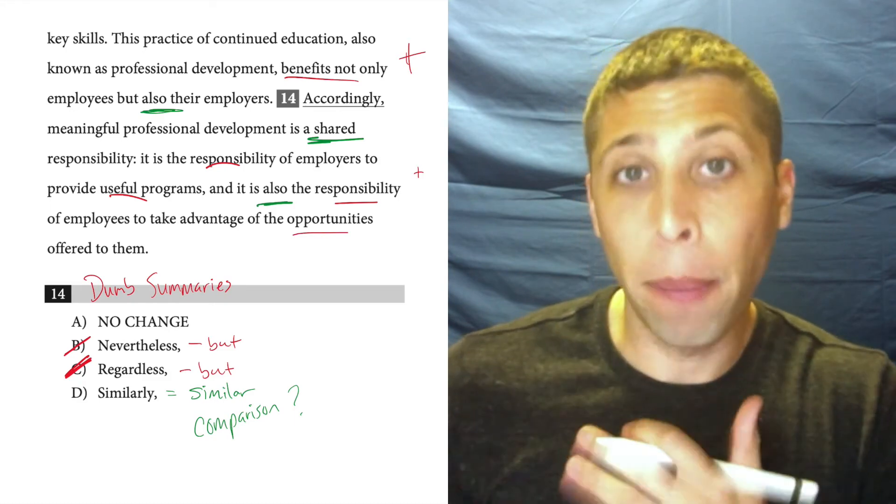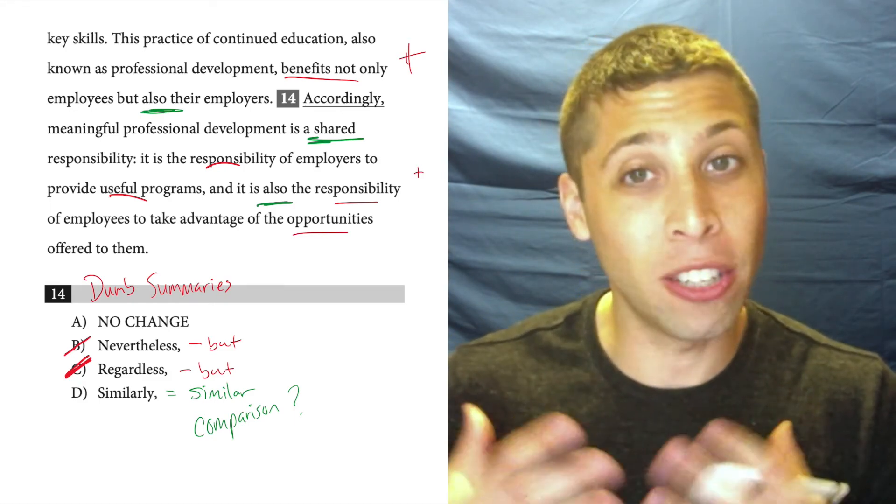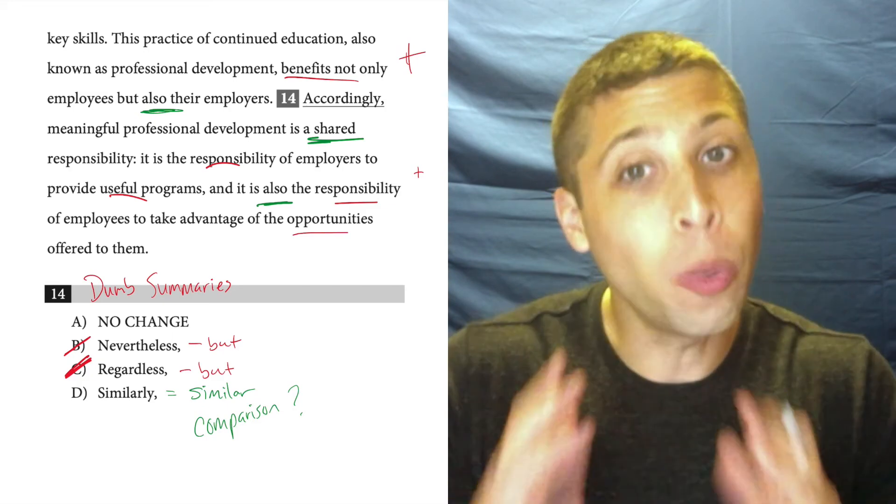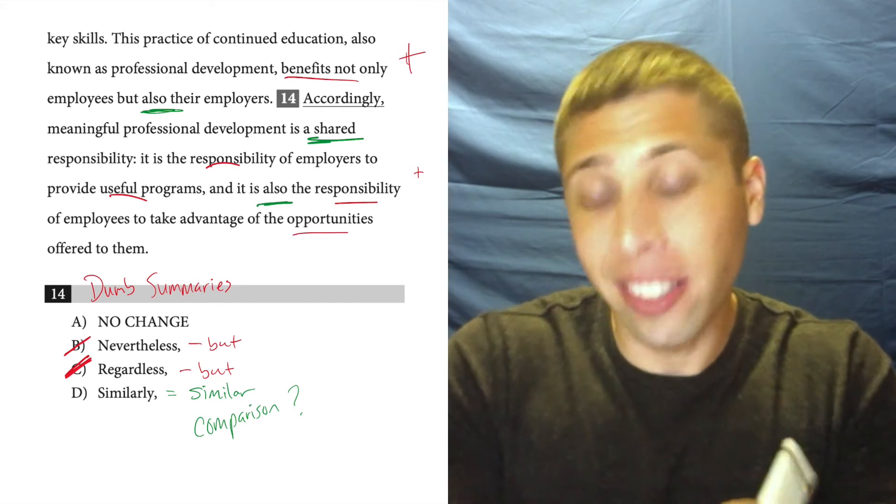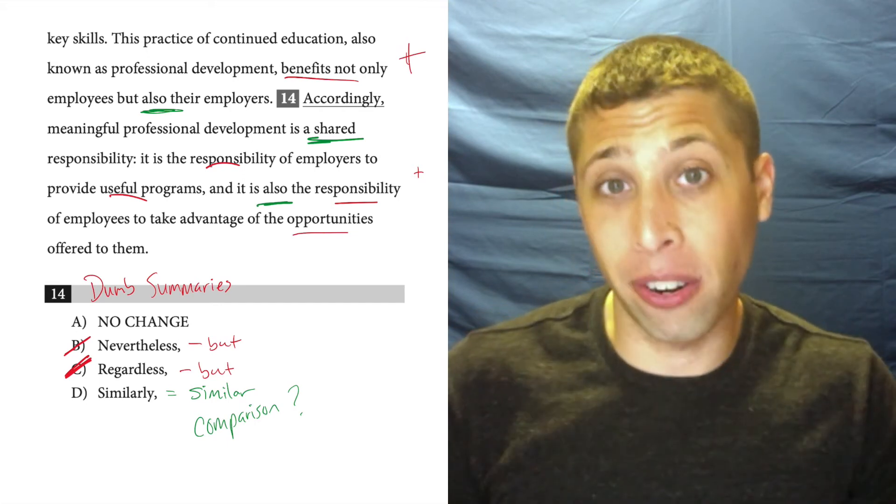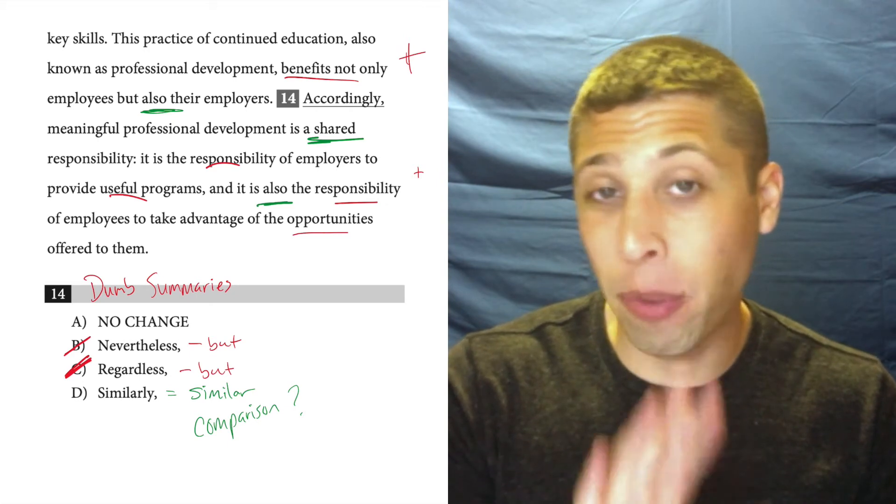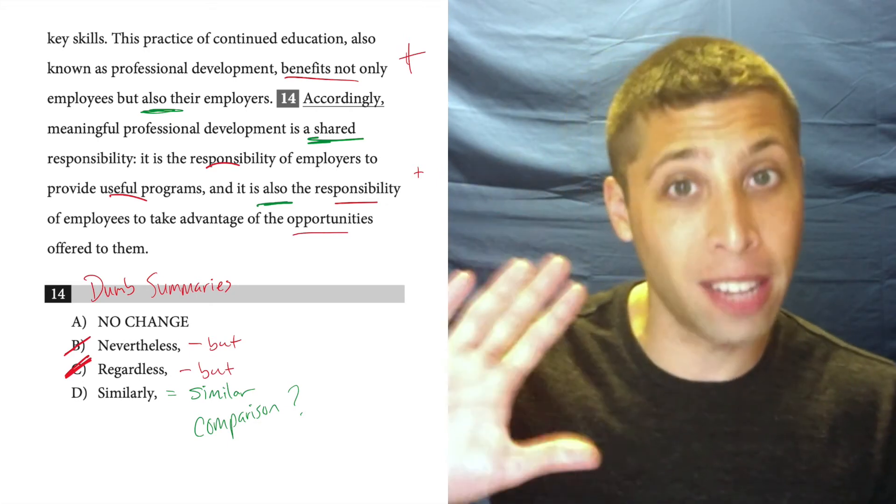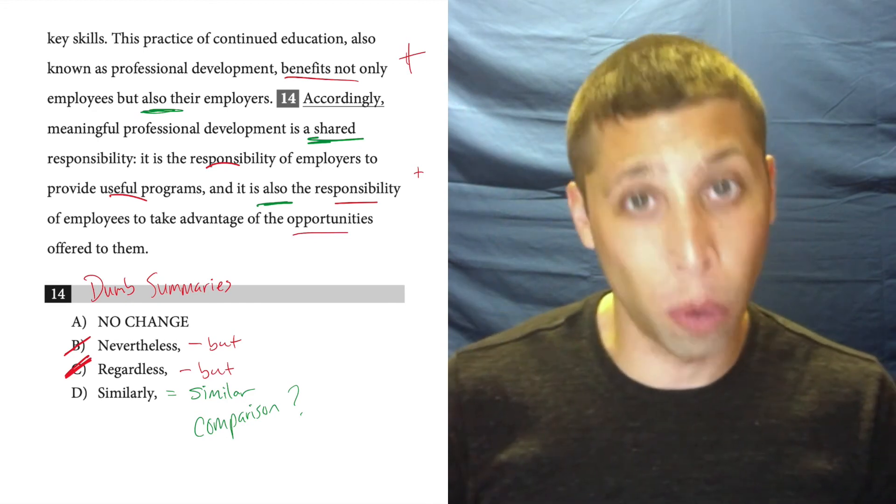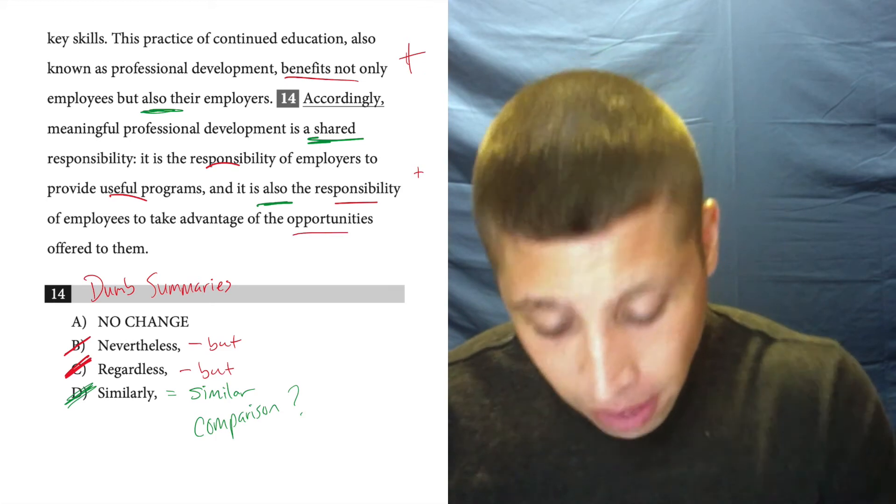So this just doesn't fit with the situation. And I know why people pick it. It's because they're so afraid of picking a word like accordingly, which they don't know, that they're willing to squeeze this bad word into this spot because it feels safer than picking something that you don't know. That's a bad strategy on the SAT. We very often are going to have to pick answers we don't like because all the answers that we understand don't work. This is that case. Similarly is wrong here. The answer is accordingly.